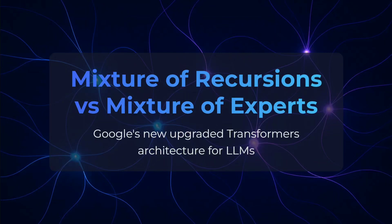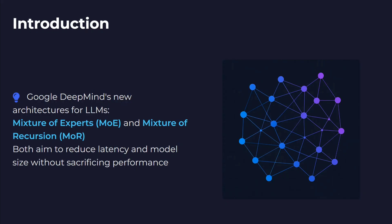Hi everyone, welcome back to Data Science in Your Pocket. Today we are discussing Google DeepMind's new architecture called Mixture of Recursions. I've already explained this in detail in my previous video, but this time I'm going into the details of how Mixture of Recursions is different from Mixture of Experts, and what Mixture of Recursions brings into the picture. Google DeepMind has announced this new architecture, and both aim to reduce latency and model size without sacrificing performance.